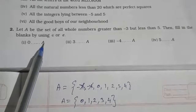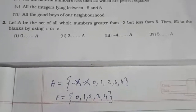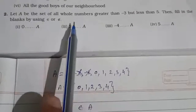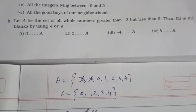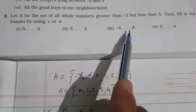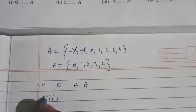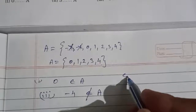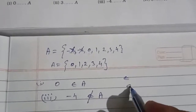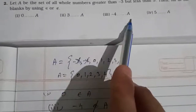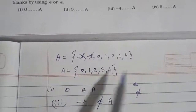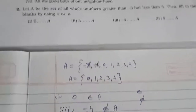Now fill in: zero dash A — does zero belong to A? Yes, so write zero ∈ A. Next, three ∈ A — yes, three belongs to A. Next, minus four — minus four does not belong to A, so write minus four ∉ A. Next, five — five does not belong to A because five is nowhere in the set.